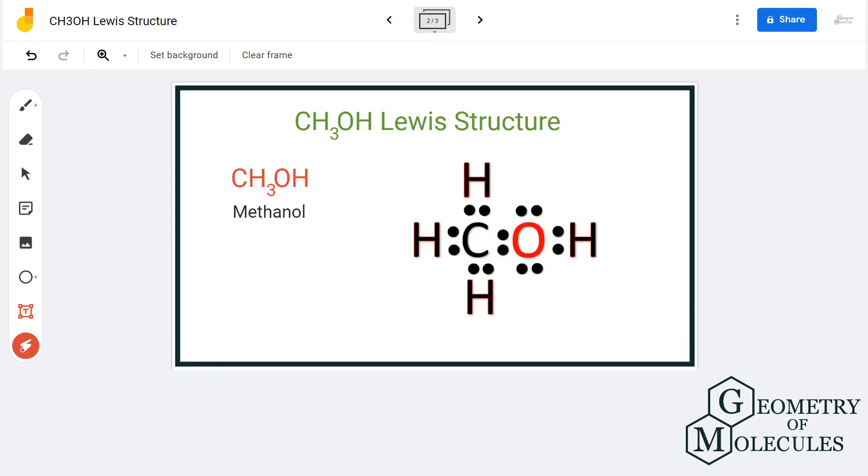Carbon has eight electrons because it is sharing four of its electrons with three hydrogen atoms and one OH group. Hydrogen also has two valence electrons in its outer shell, which means it is stable, and oxygen also has a complete octet.